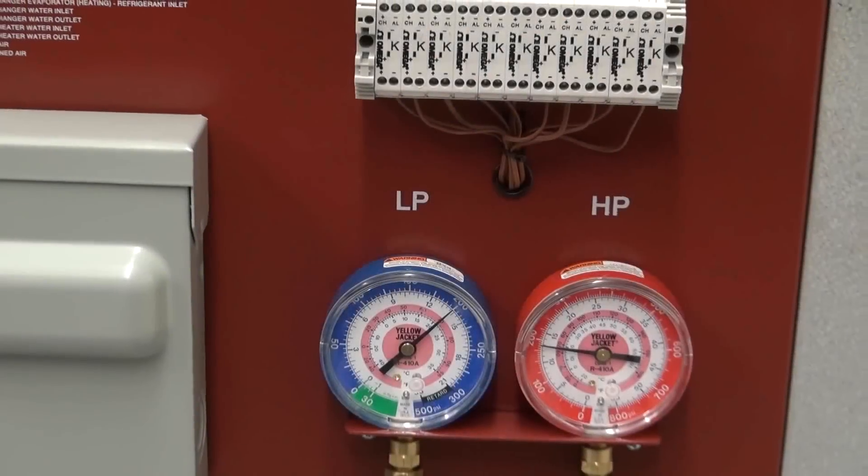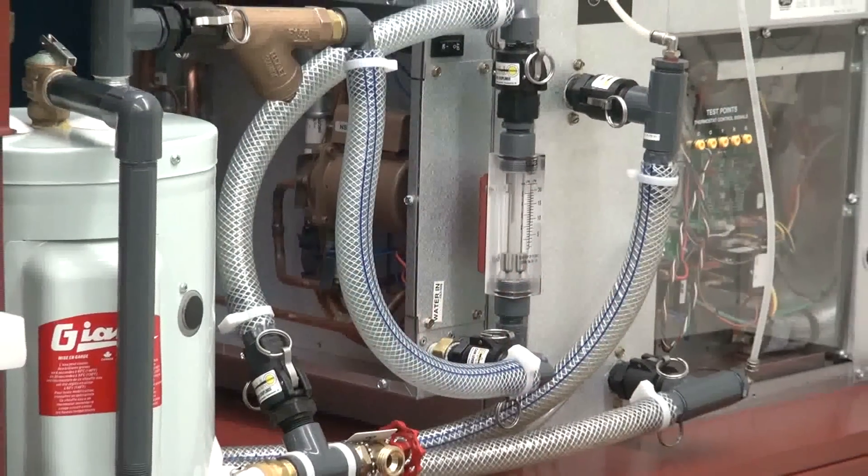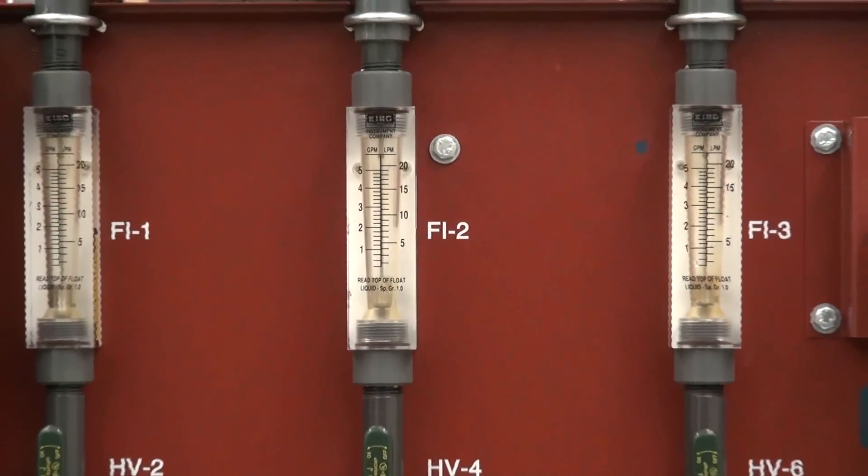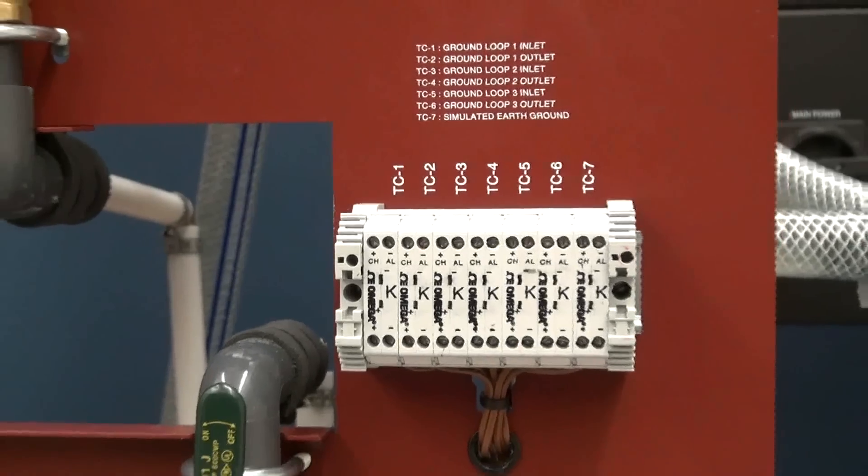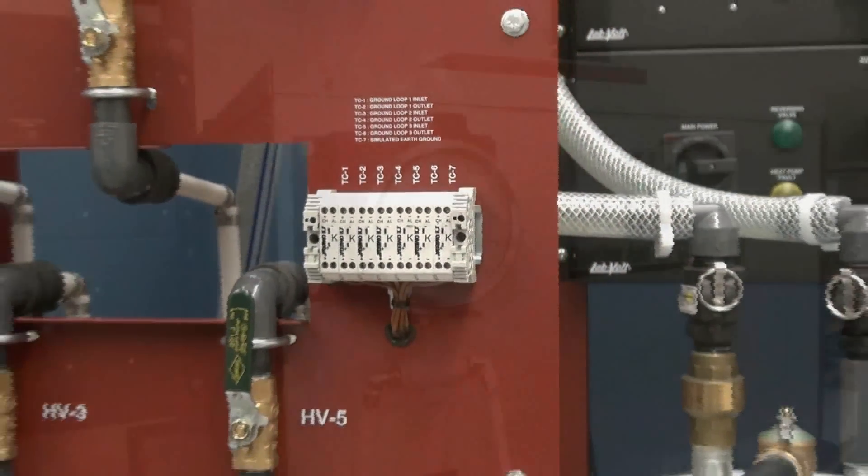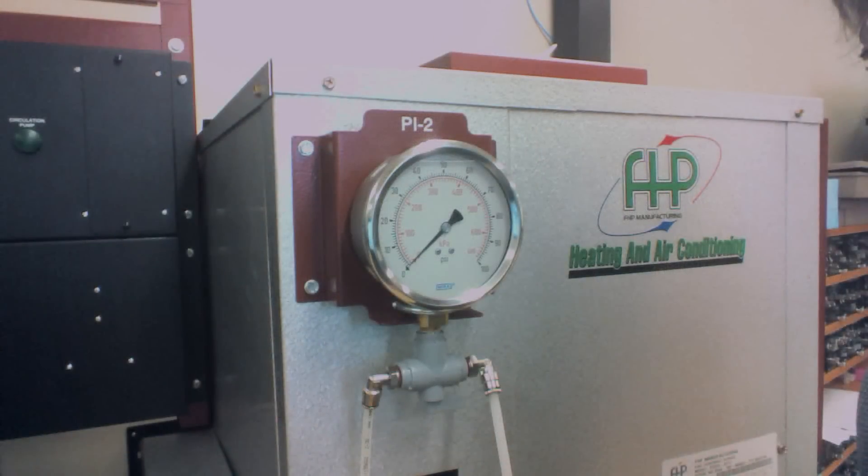The instrumentation features refrigerant high pressure and low pressure gauges, 5 flow meters, 18 temperature probes located at pertinent points and accessible through terminal blocks, and heat exchanger monitoring pressure gauges.